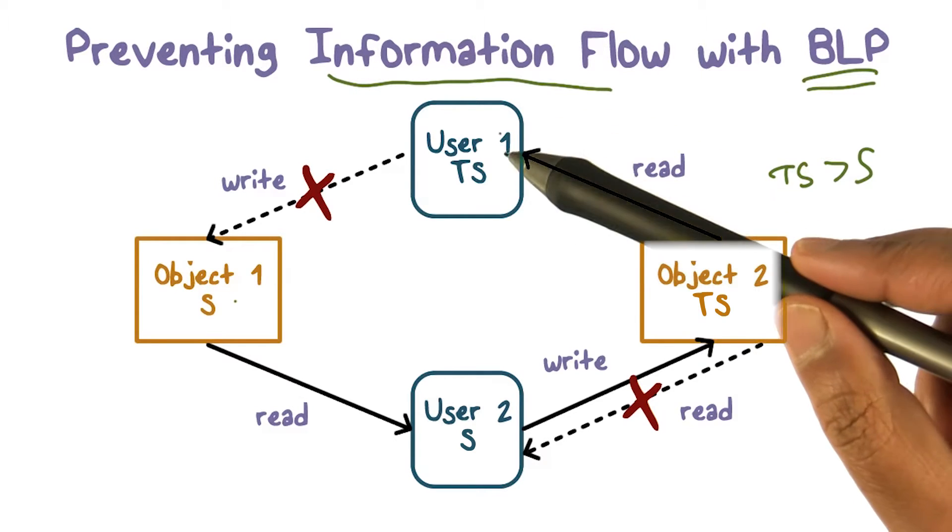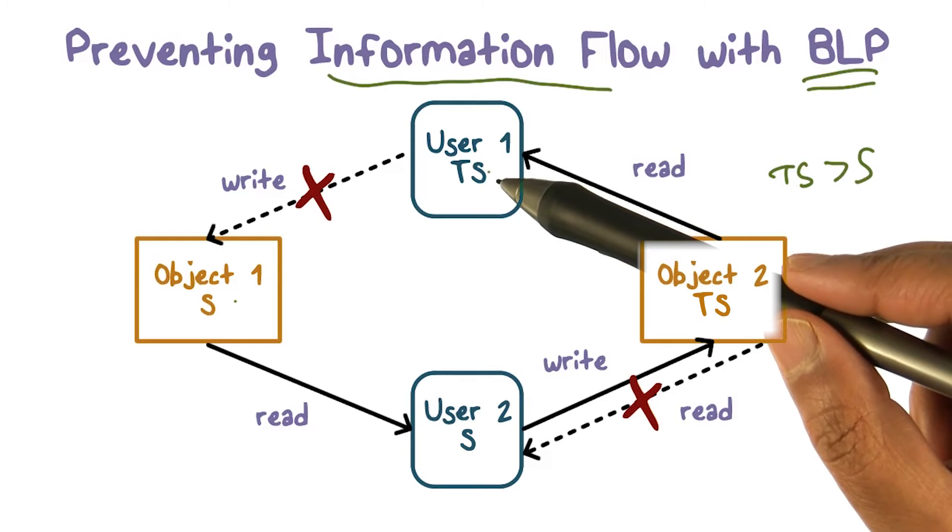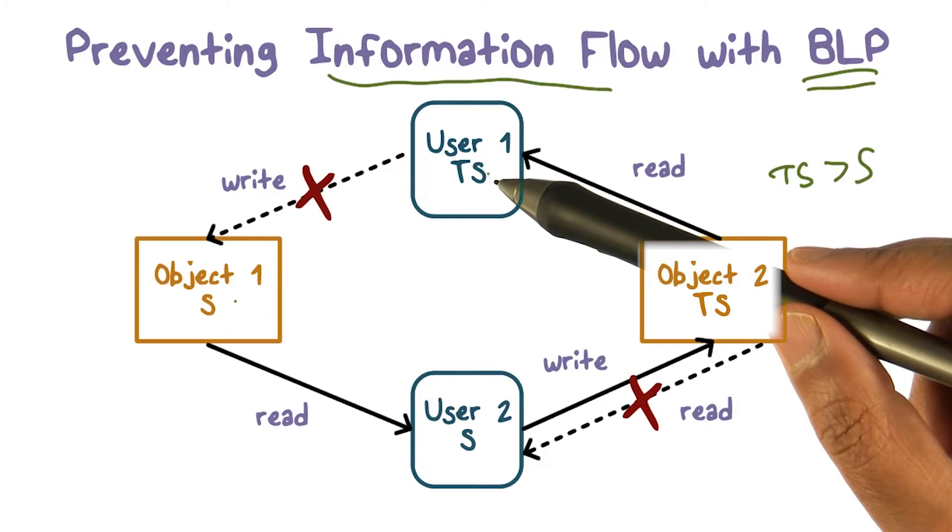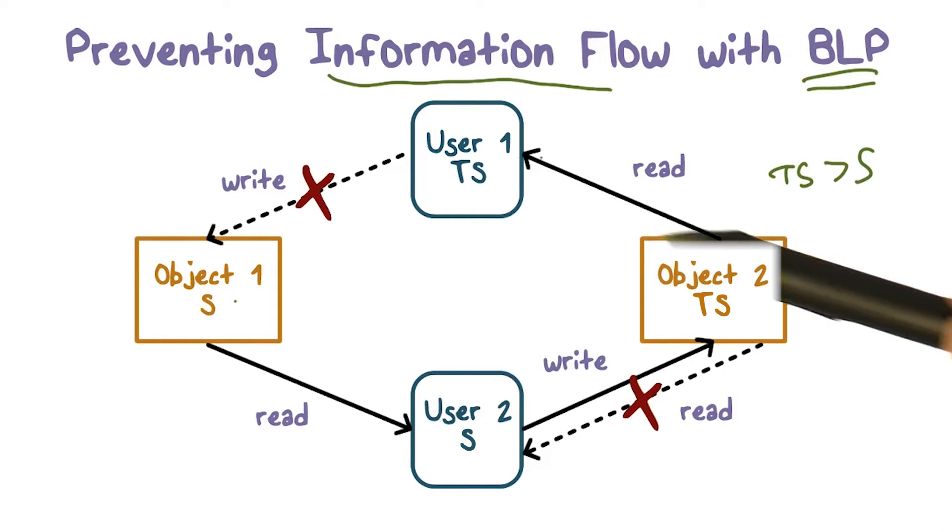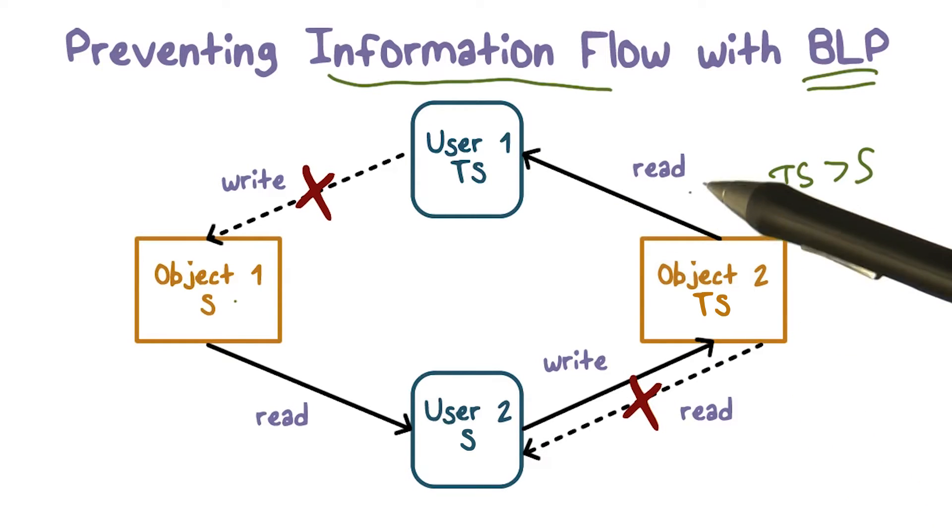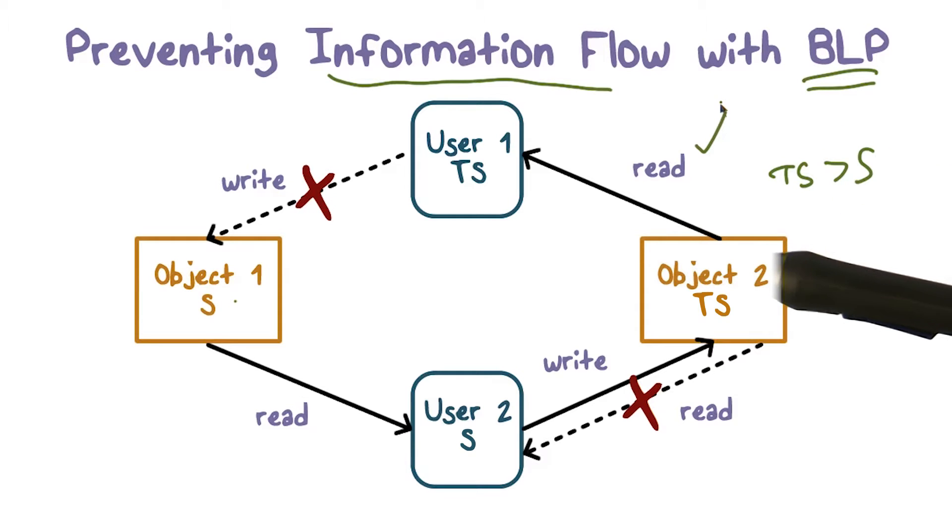For this to read, for someone to be able to read this, the user has to be TS, otherwise they can't read it. A secret user can only read secret or below. So a top secret user can read this object. So this read will be allowed.